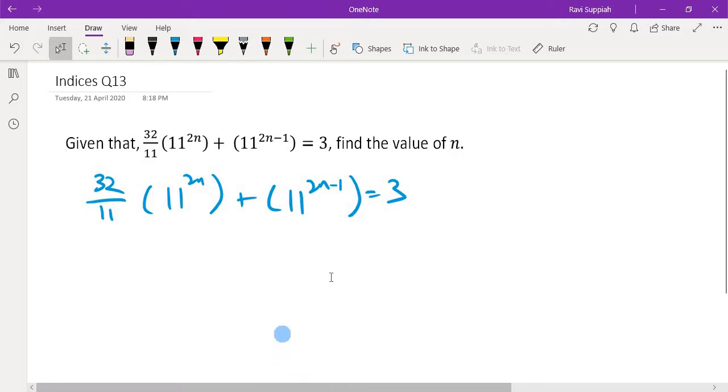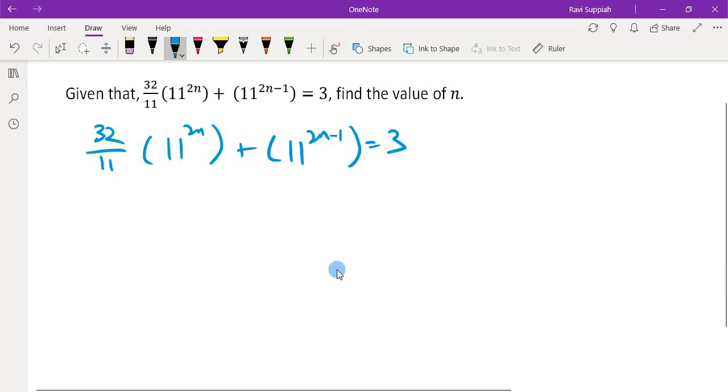What we have is 11 to the power of 2n and 11 to the power of 2n minus 1. On the first expression, we see that 32 is divided by 11. This brings us to an indices formula: 1 over a^n equals a^(-n).